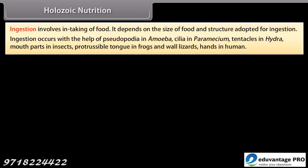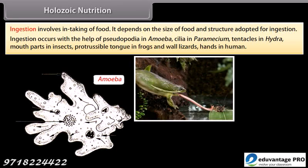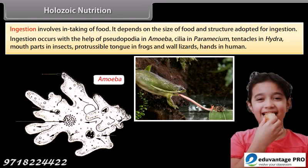Ingestion occurs with the help of pseudopodia in amoeba, cilia in paramecium, tentacles in hydra, mouthparts in insects, protrusible tongue in frogs and wall lizards, and hands in humans.